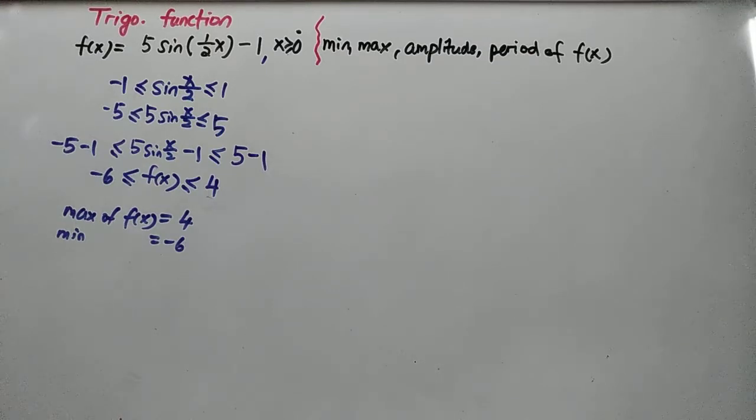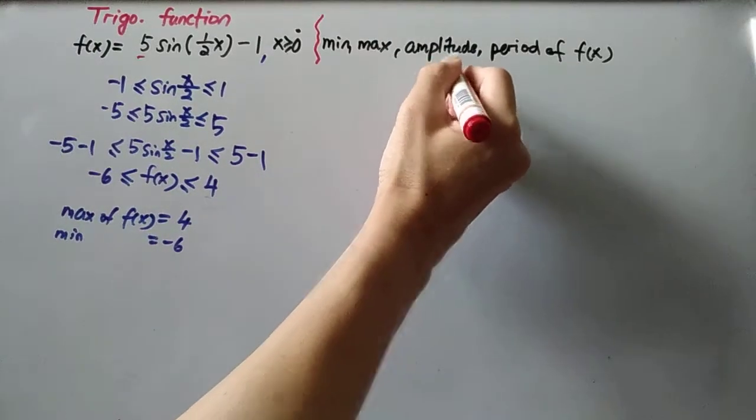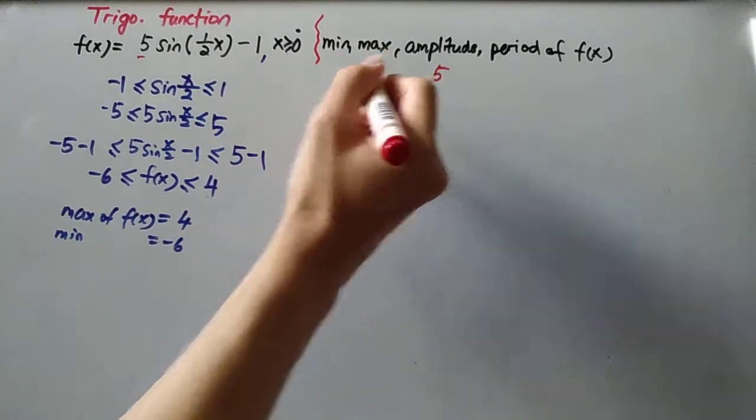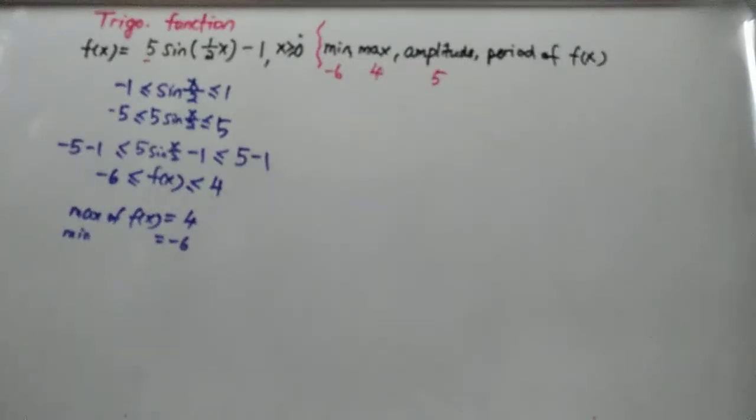Amplitude - amplitude is basically the coefficient of the trig function, so that's why this is actually 5. Maximum is 4, minimum is negative 6. Then the period of f(x) - for sine function...